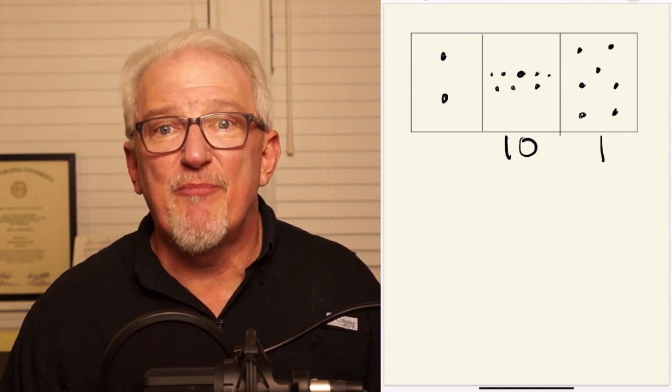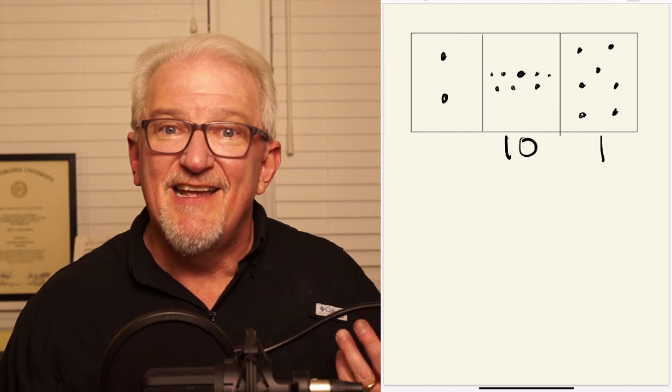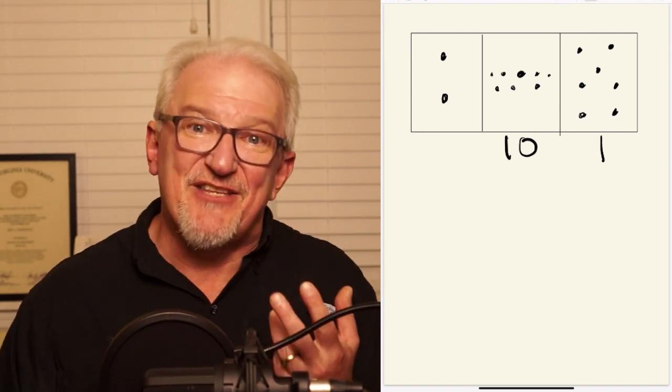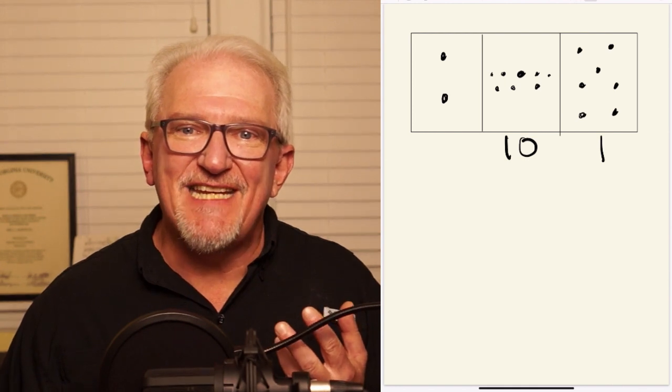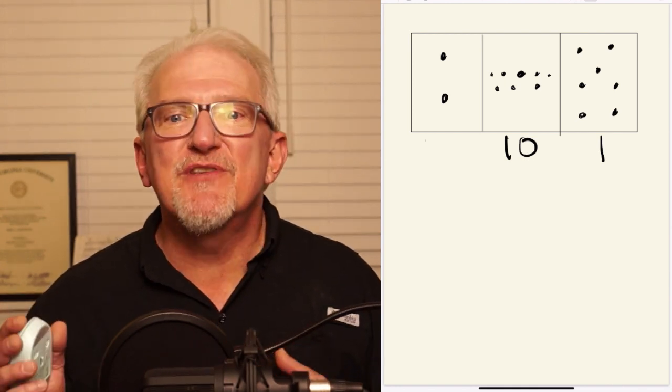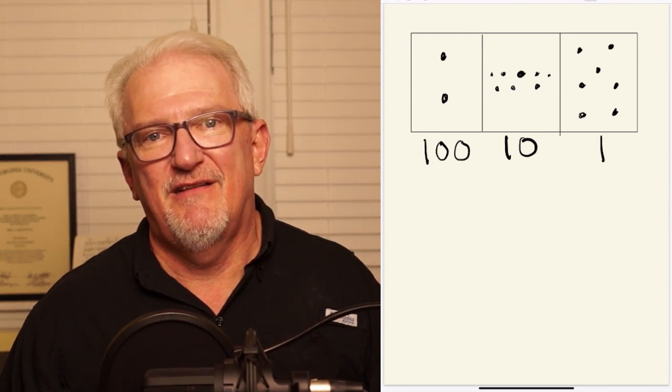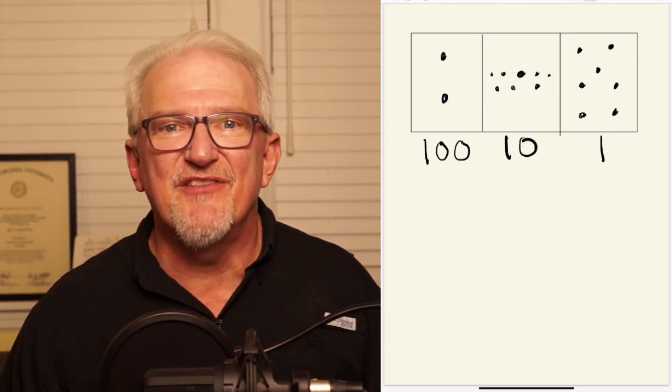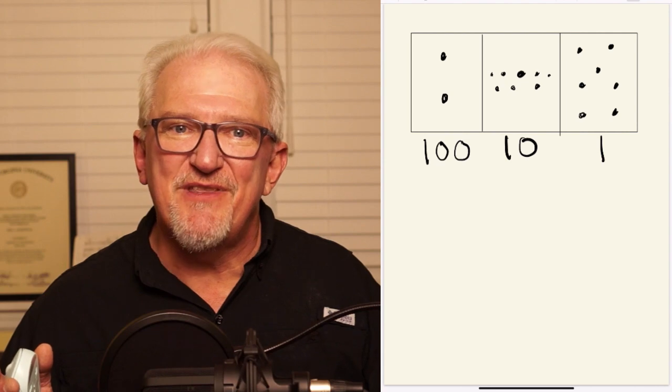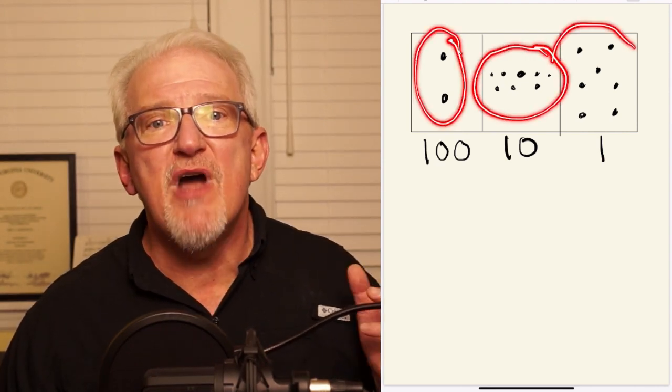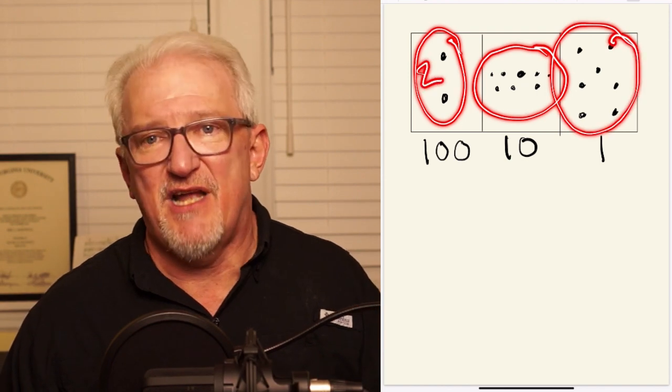Since each dot in the middle represents 10 dots on the right, and each dot on the left represents 10 dots in the middle, it follows that each dot on the left represents a total of 100 dots. Therefore, the two dots on the left, together with the 8 dots in the middle and the 7 dots on the right, represent our group of 287 dots.